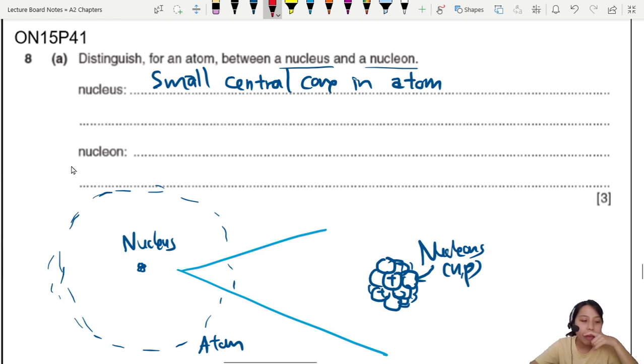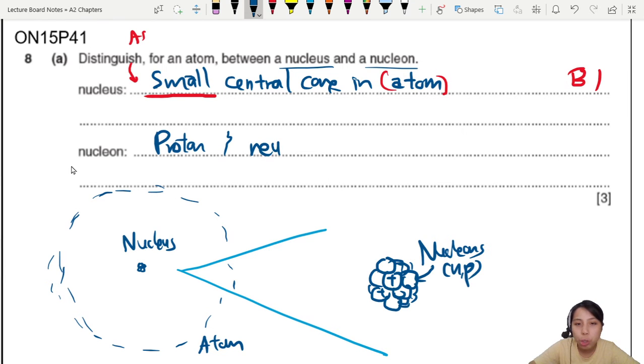So the main keyword here, surprisingly, is small. If you check the mark scheme, there's an emphasis on that because the nucleus is really, really very small in comparison to the atom. So make sure you mention the small. So this is B1 for a small central core in the atom. Nucleons are those things inside the atom. So we say that these are the proton and neutron particles inside the nucleus.